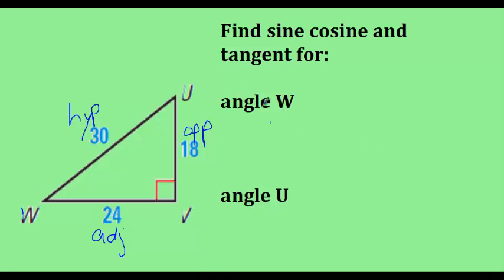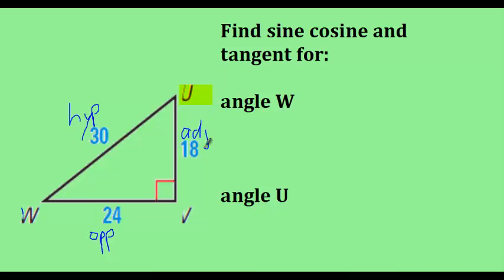However, this changes if we're looking at angle U. For angle U, the opposite and the adjacent are switched. The opposite side is 24. This is why labeling is very helpful, because sometimes we're looking at triangles that have been skewed or transformed in ways that we're looking at different angles. For angle U, the adjacent side is 18, and the hypotenuse is still 30 because they meet at point U, the vertex. The opposite side now becomes 24.